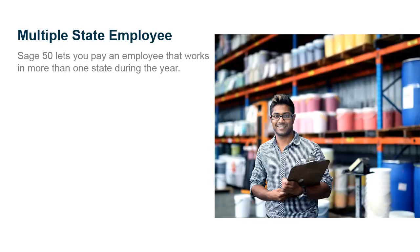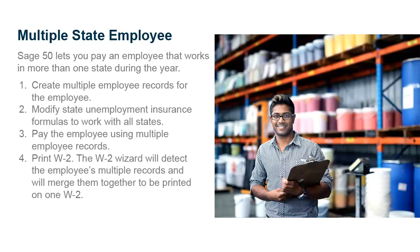SAGE 50 makes it possible to pay an employee that works in more than one state during the payroll year. Setting up this type of employee is a four-step process: first, create multiple employee records; then modify your state unemployment insurance formulas. You can then pay the employee using multiple records so that state withholding is deducted correctly for each state. At the end of the year, you can print the employee's W-2. When set up correctly, the W-2 wizard will detect the employee's multiple records and merge them together to be printed on one W-2.